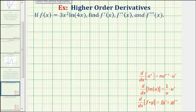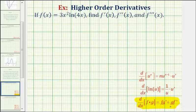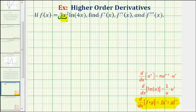So to find our derivatives, we'll have to apply the product rule of differentiation given here. If we want to find the derivative of f times g with respect to x, this will equal f times g prime plus g times f prime — the first function times the derivative of the second, plus the second function times the derivative of the first. Looking at the given function, we'll let f equal three x squared and g equal natural log four x. Notice that function g is a composite function, so when finding g prime, we'll have to apply the chain rule.